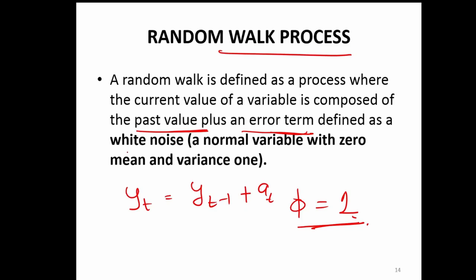This is typically also known as white noise, where you have 0 mean and variance of 1. In such a case, you will not be able to use time series. For white noise, there is no point using time series — there is nothing that can be done in a white noise series. So, just avoid using anything for such a process.